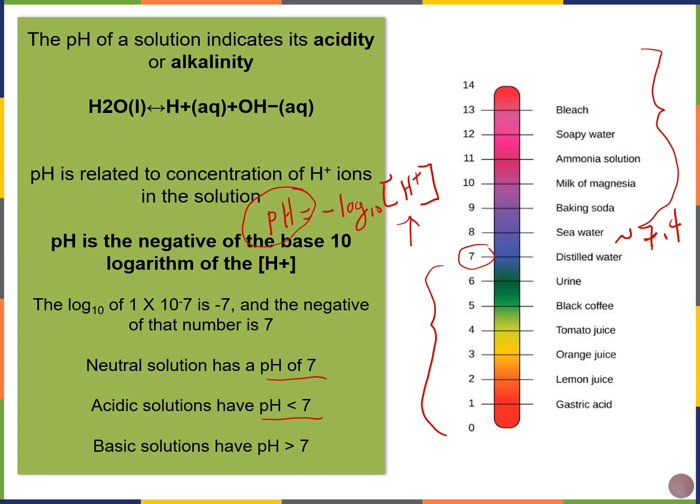If I drink a can of Coca-Cola, those are pretty acidic. So what happens when I drink a can of Coke? How come I don't die? The pH of my blood stays relatively stable. I wonder why that is.